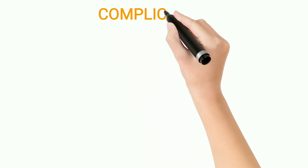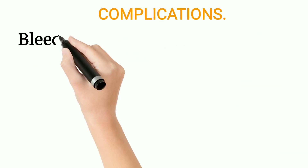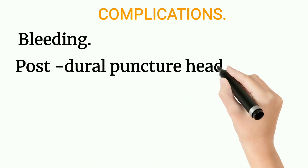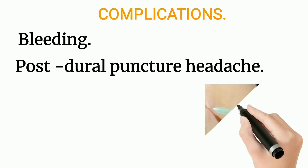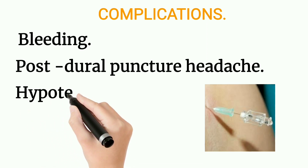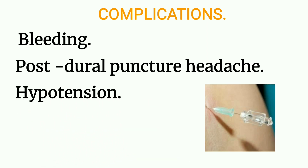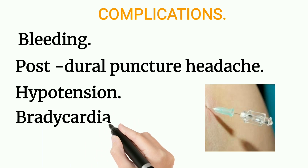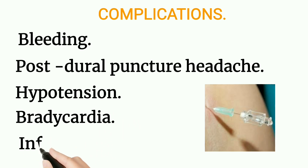Complications of spinal anesthesia: bleeding; post-dural puncture headache — when the dura is punctured and CSF leaks, the patient develops a severe headache; hypotension — spinal anesthesia relaxes all blood vessels causing blood pressure to fall; bradycardia — associated with hypotension in spinal anesthesia; and infection — requiring strict sterile technique during the procedure.